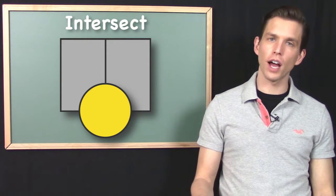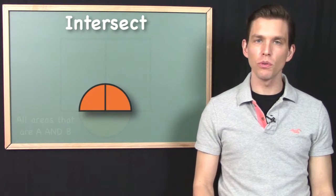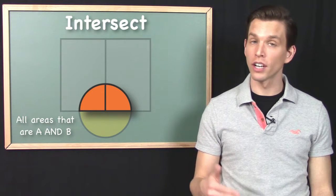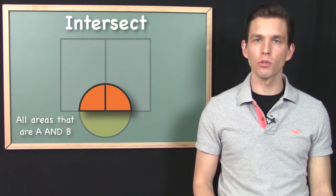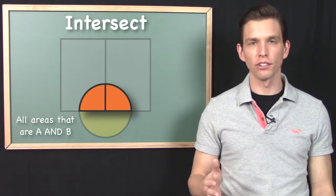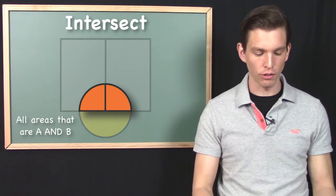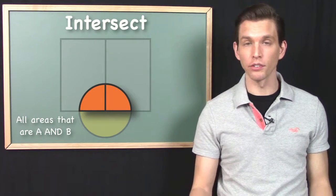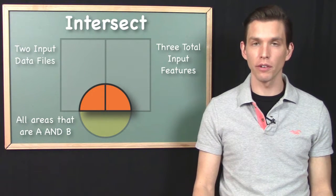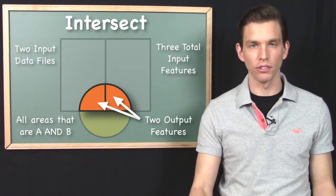When we execute the intersect operation on these two data files, the result is a new data file that has two features in it — these two quarter circles. Notice how the intersect operation is chopping up the geometry of the input features to return something. I had three input features across two files: one file had two features, one file had one feature, and the output has two features — these two quarter circles.